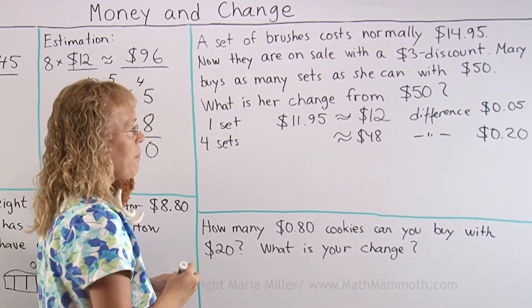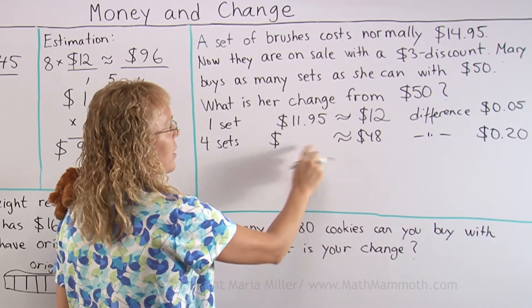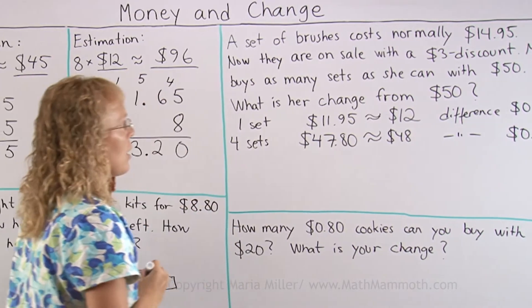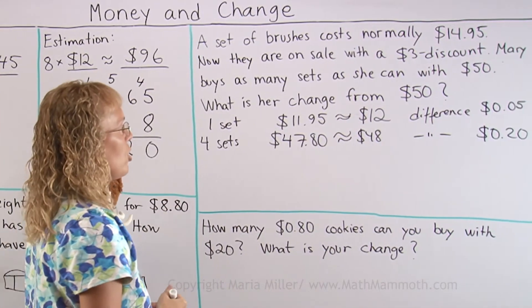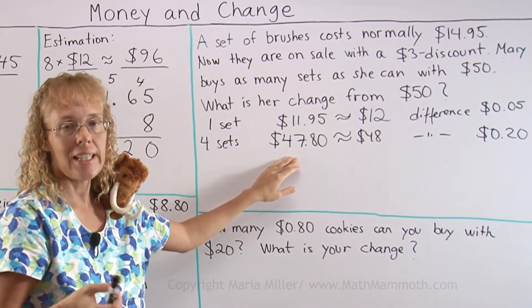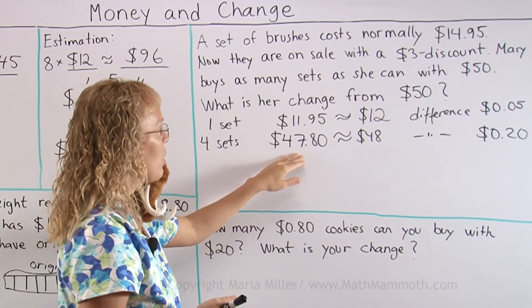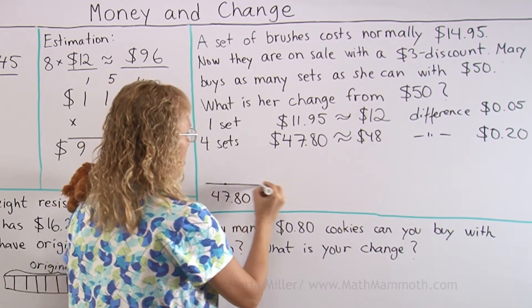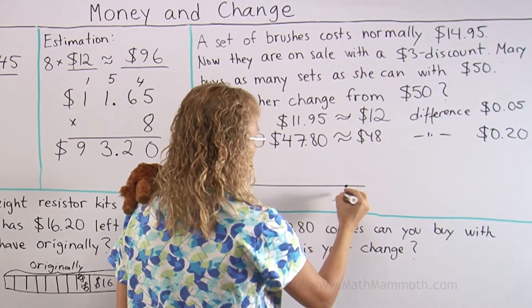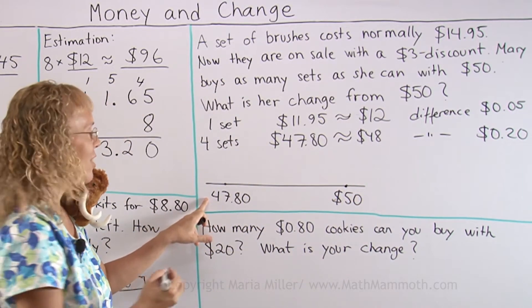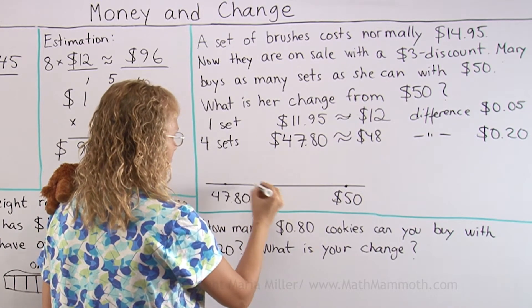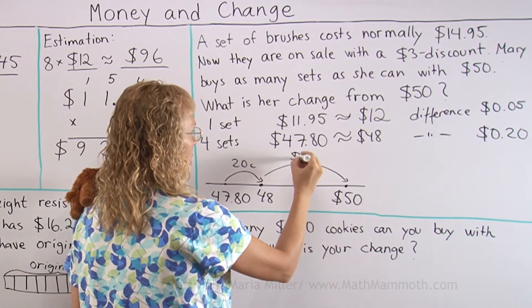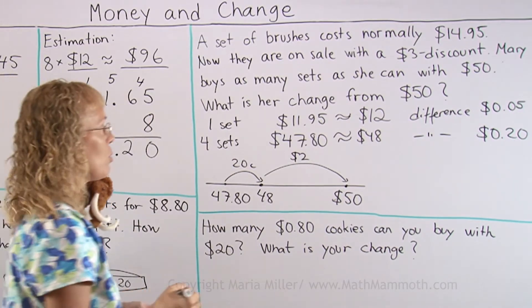The difference is 20 cents, so this must be 20 cents less than $48, which is $47.80. That is how much four sets cost. And now her change — I go from $47.80 to $50. Imagine a number line: from $47.80, first go up to $48.00, that's just 20 cents. Then from $48.00 to $50.00 is $2.00. So in total, the change will be $2.20.